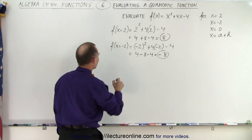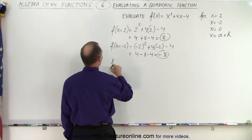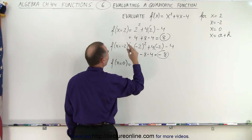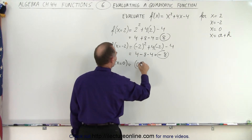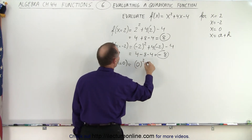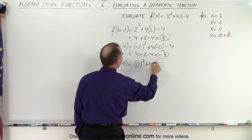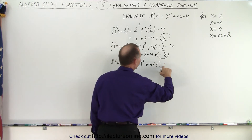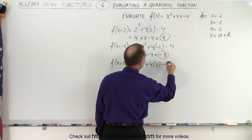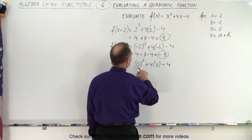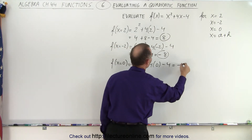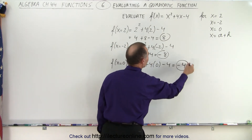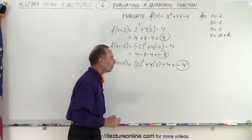How about x equals 0? f when x equals 0 — we replace every x by 0. So we get 0 squared plus 4 times 0, minus 4. That gives us 0 plus 0 minus 4, which equals minus 4. So that's the function when x equals 0.